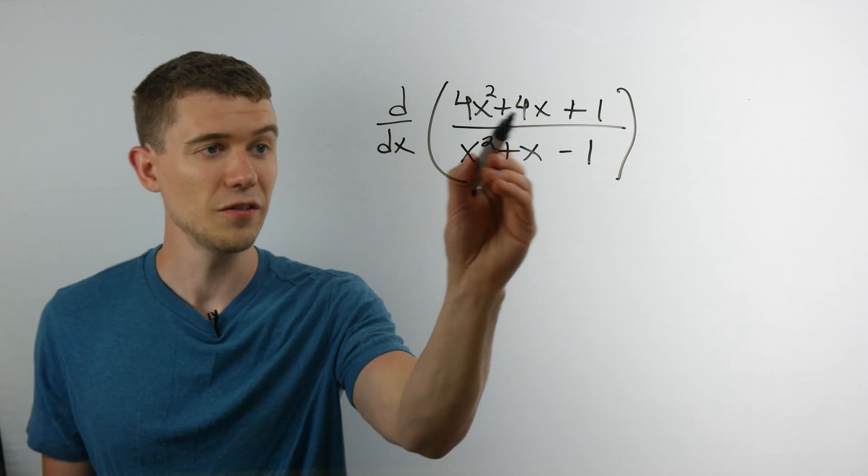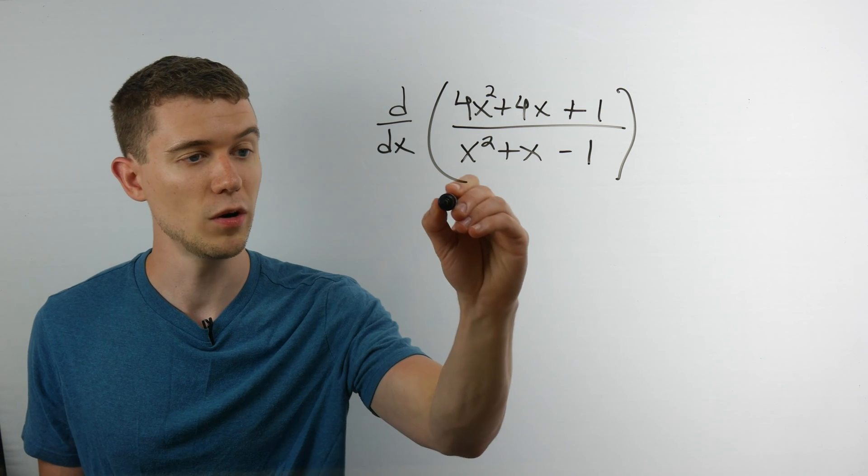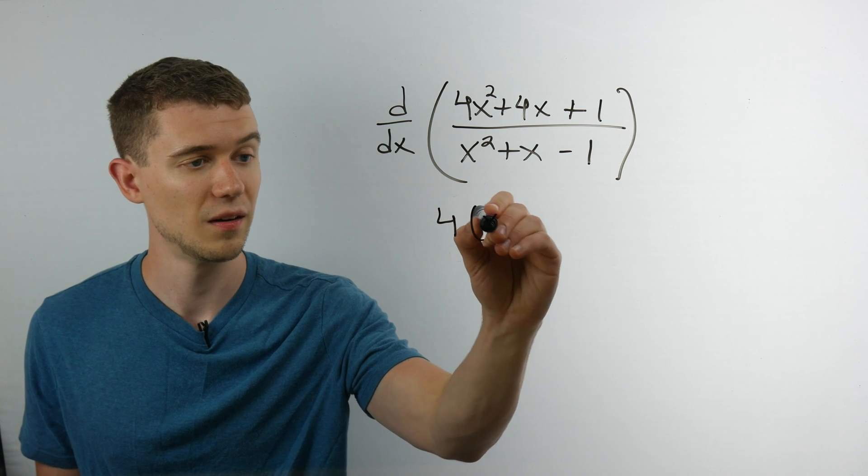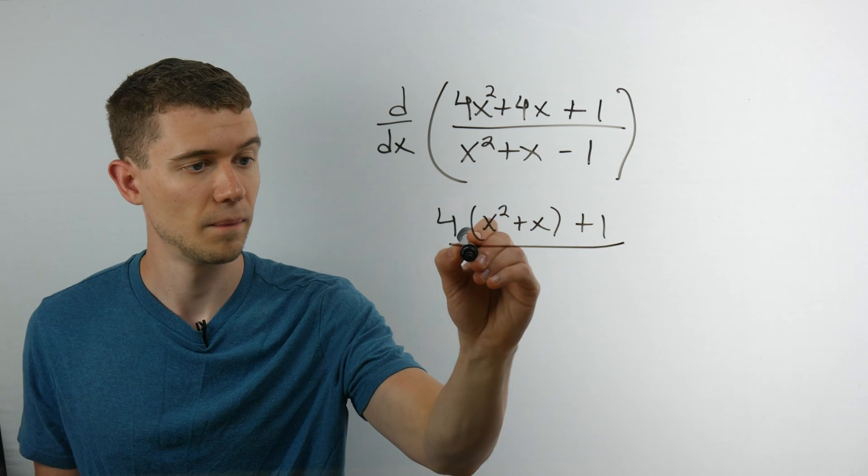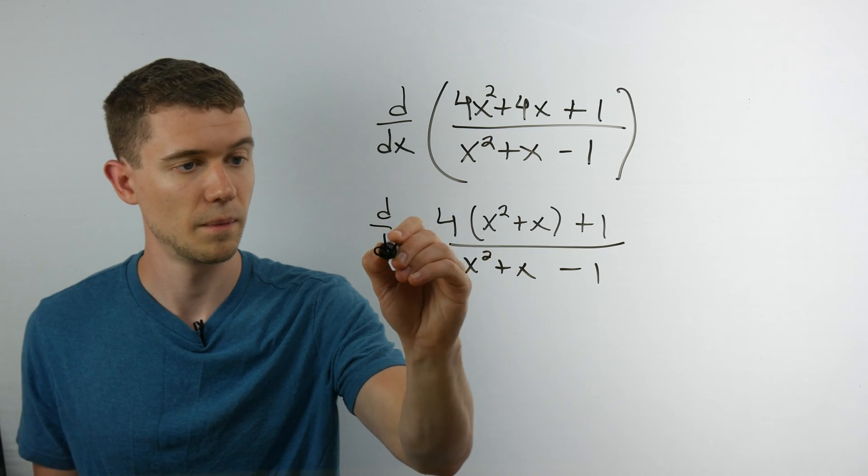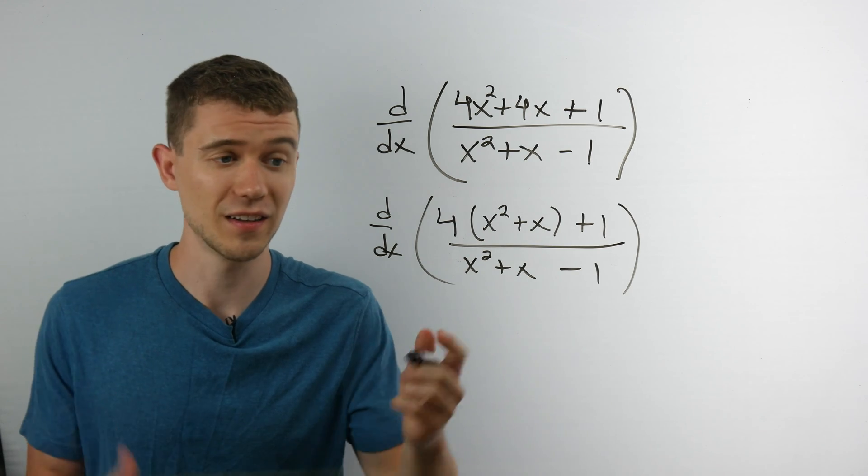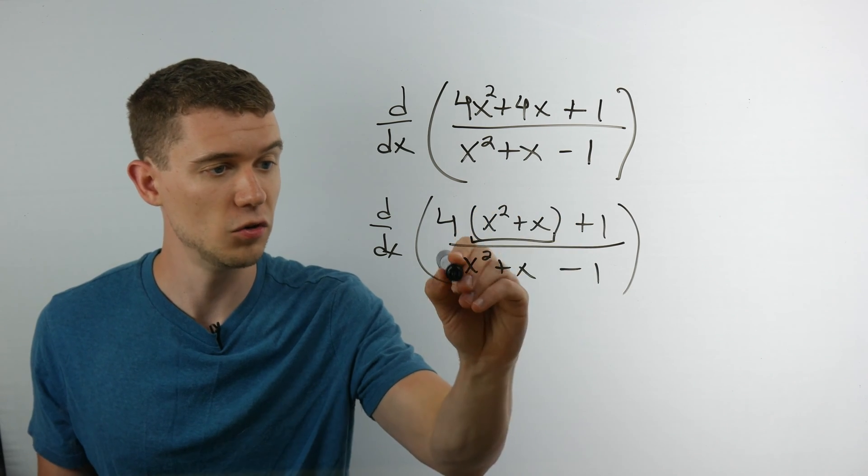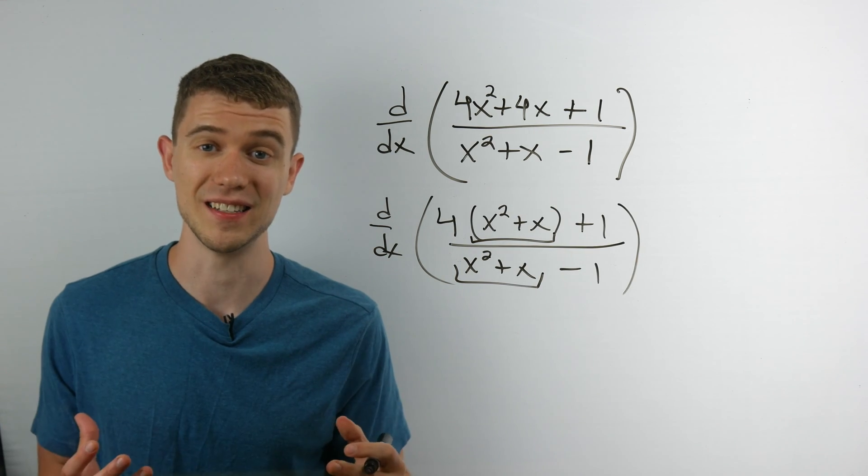You'll notice here there's a factor of 4 in common between the x squared and the x term. What if I factor that out? Well all of a sudden now we're able to use the trick because the first two functions match and they're followed by constants.